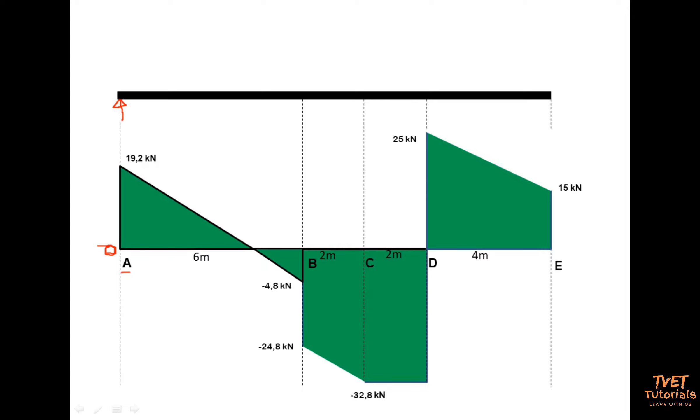So that reaction is called A or it's called the left reaction. And its magnitude is 19.2 kilonewtons. The reaction at point A is 19.2 kilonewtons, the same as the distance or the height of the shear force diagram.